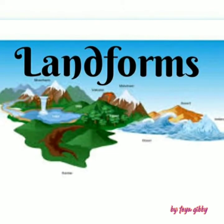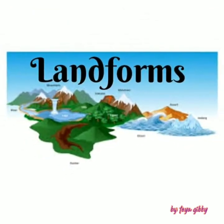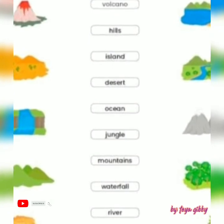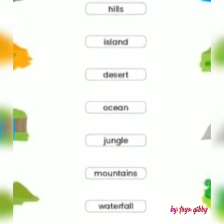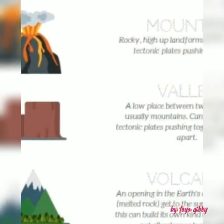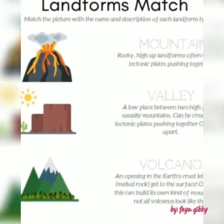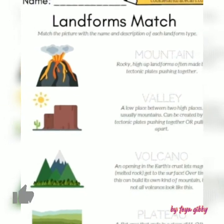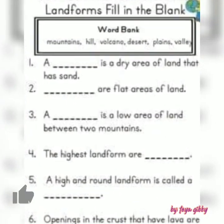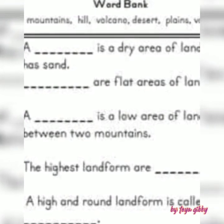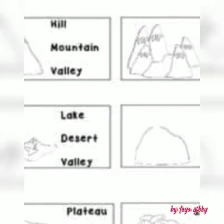That is the end of today's lesson on landforms. Let us recap what we have done. Landforms are divided into two: highlands and lowlands. Highlands are landforms which rise above 150 meters above sea level, while lowlands are landforms 150 meters or less. Examples of highlands are mountains, hills, and plateaus. Examples of lowlands are plains and valleys.